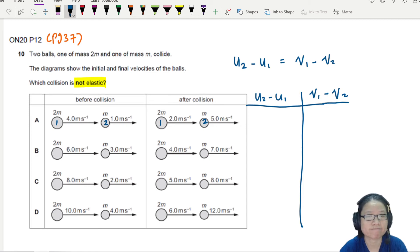So u2 minus u1, this will be 1 minus 4 which is negative 3. And then this one would be 2 minus 5 which is negative 3. This one is elastic because they are equal.